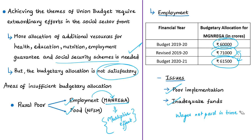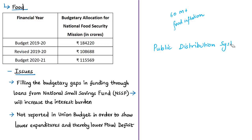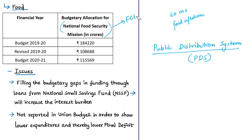Regarding food schemes, the author expected announcements on expanding the public distribution system (PDS), especially given excess food stocks of almost 60 million tons, high food inflation, and reports of hunger across the country. The budgetary allocation for PDS comes under the National Food Security Act and represents food subsidies to the Food Corporation of India (FCI). But PDS received a much lower budget allocation than the previous year.